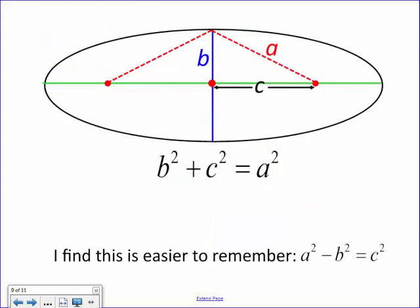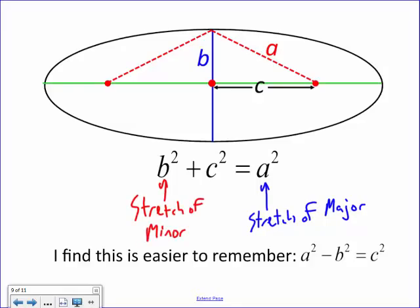By the Pythagorean theorem: b² + c² = a². Here, a is the stretch of the major axis, b is the stretch of the minor axis, and c is the focal length — the distance from the center to a focus. It's easier to remember it rearranged as a² minus b² equals c².